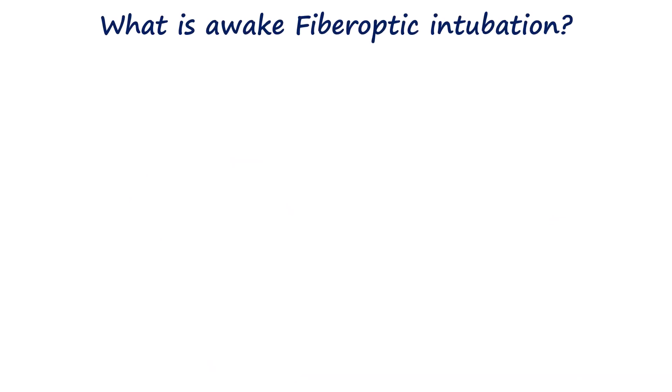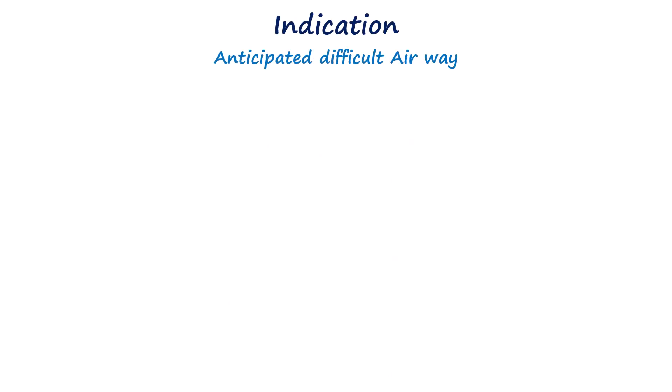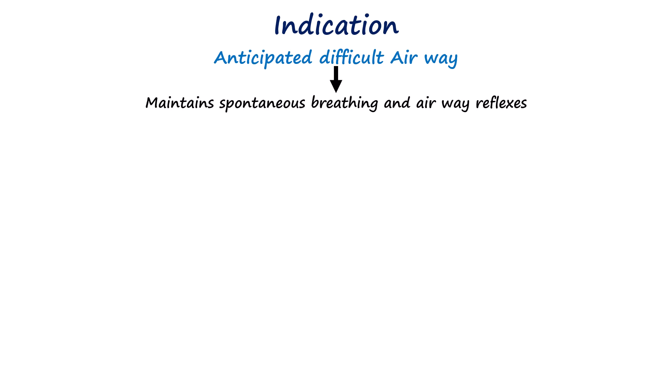Awake fiber-optic intubation is a technique used to secure the airway in patients who are awake or lightly sedated, utilizing a fiber-optic bronchoscope to visually guide the placement of an endotracheal tube. It can be performed either orally or nasally. It is considered the gold standard for managing an anticipated difficult airway, particularly in elective procedures. Its primary purpose is to maintain the patient's spontaneous breathing and airway reflexes while securing the airway, thereby avoiding the risks associated with general anesthesia like hypoxemia and failed intubation.